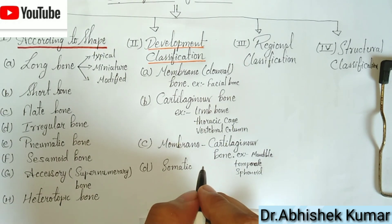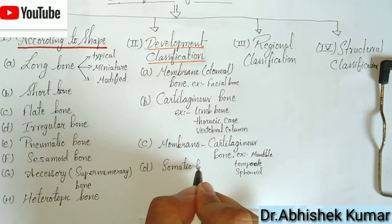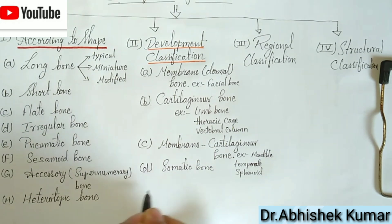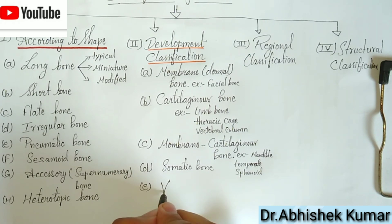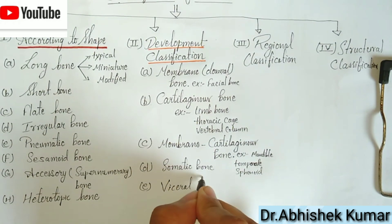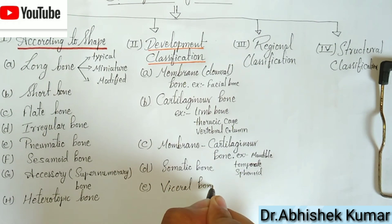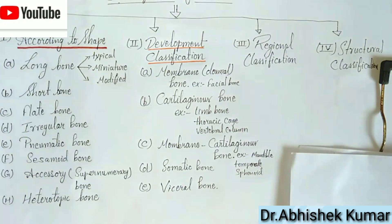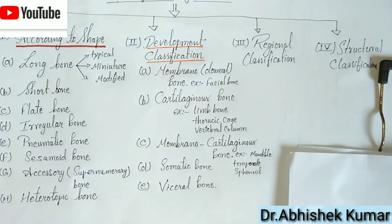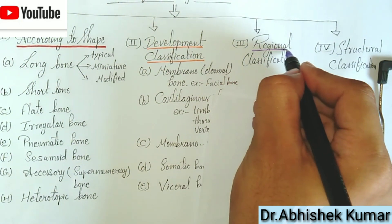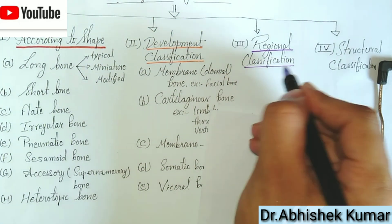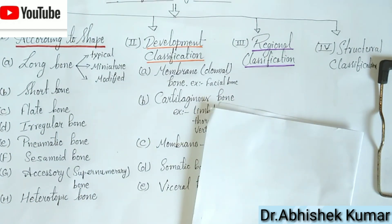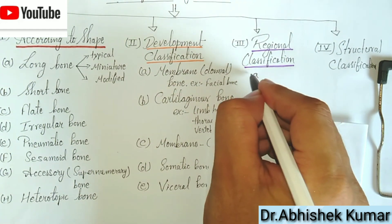Most of the bones are somatic bones. The visceral bones develop from the pharyngeal arches; an example is the hyoid bone.